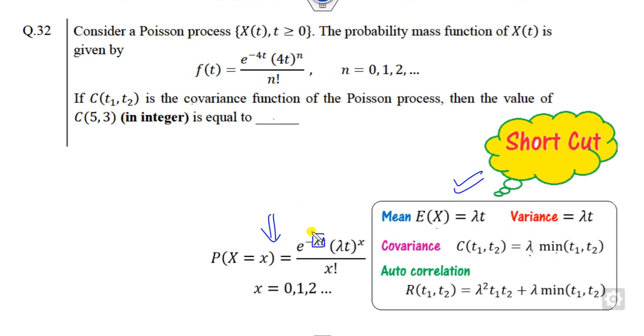So what is the right answer? Covariance is λ min(t₁, t₂). If you compare, λ is 4, and minimum of t₁ and t₂ means minimum of 5 and 3. So the right answer is 4 times 3, which equals 12. This is the correct answer for this problem.